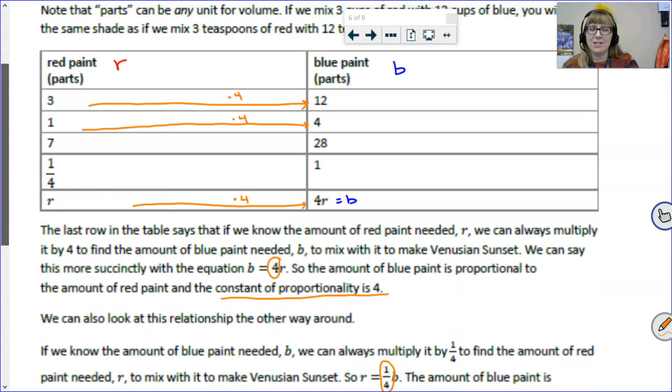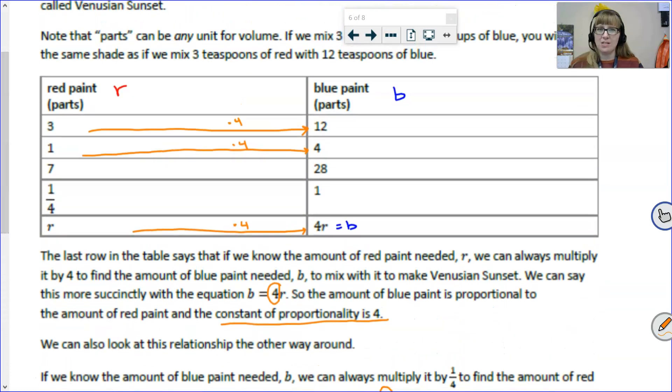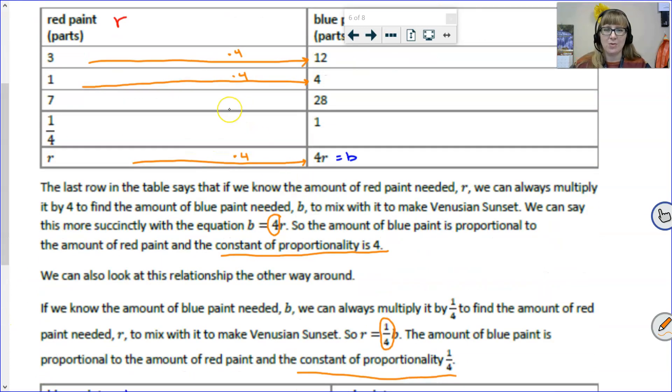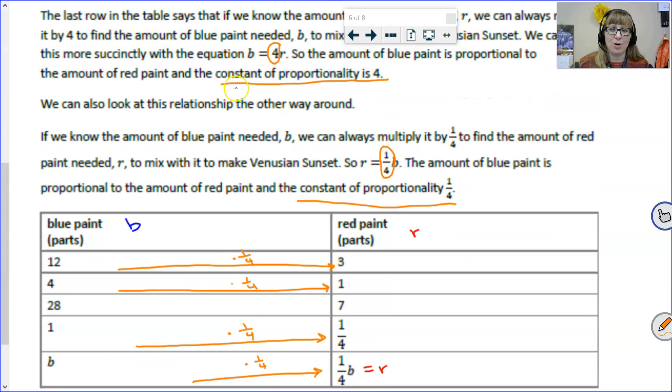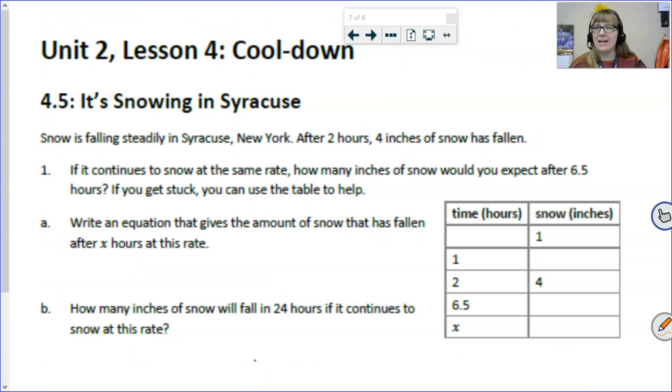Once again, recognize that the constant of proportionality here for this table was 1/4. So, what do we see in that equation? We see that same 1/4. Fun fact. Notice the relationship. We've seen this in the past. When I had the red paint and the blue paint going one direction, and then when I switched it, notice the relationship between those constants of proportionality. There's a word for that. That word is reciprocals.